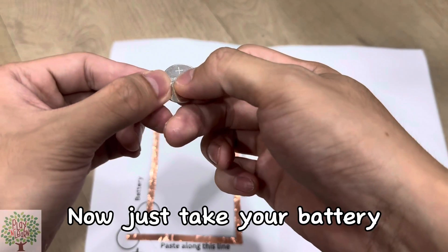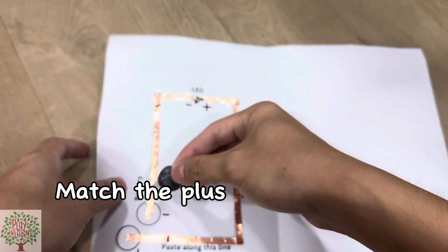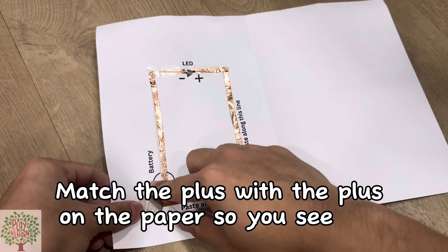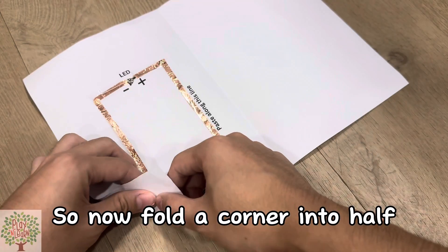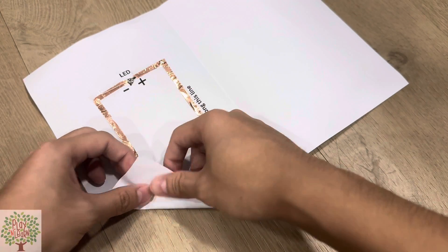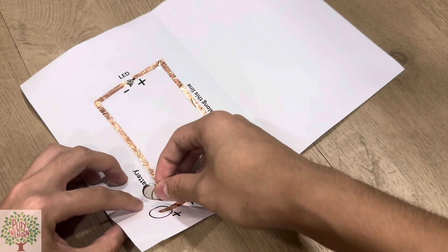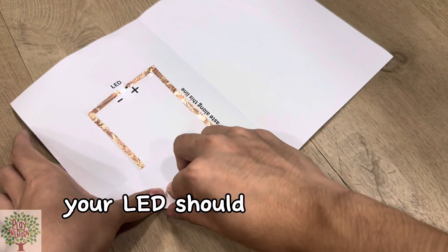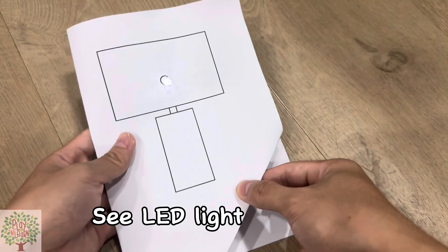Now just take your battery and make sure that the battery is on the correct side. Match the plus with the plus on the paper. You see the plus sign, the battery plus sign is also on top. So now fold the corner into half and your paper should be working just fine. Your LED should be working just fine. See, LED light is shining.